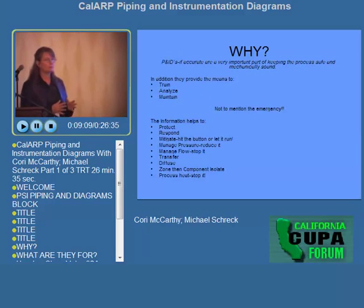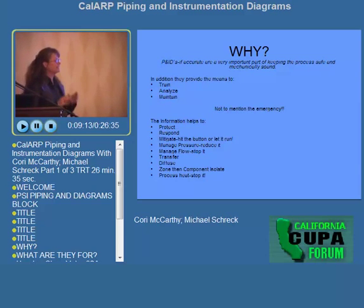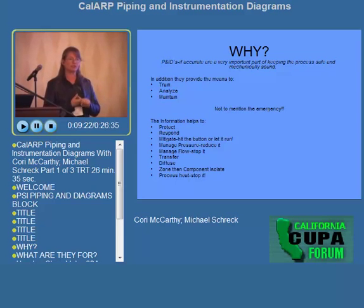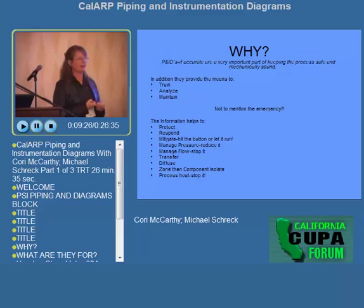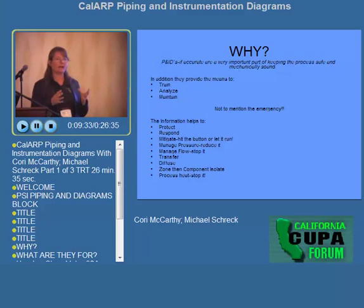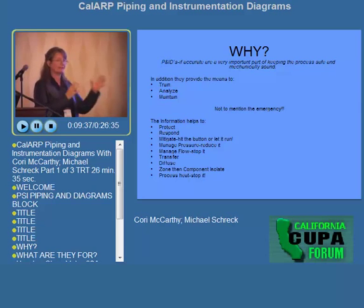Why are P&IDs important? P&IDs, if accurate and kept up to date, are a very important part of keeping the process safe and mechanically sound. They provide a means for training — a lot of technicians and operators may never get a chance to look at the P&ID and compare it to what they see in front of them. It's an important method of training: high pressure, low pressure, vapor, liquid, where we are in the system, and what's happening.